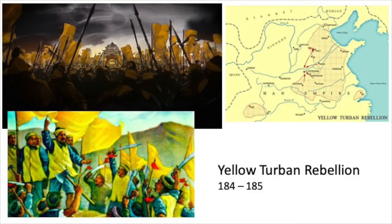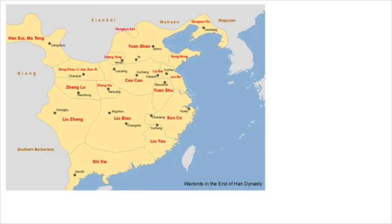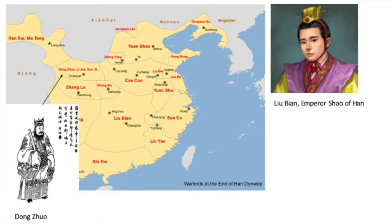Let's go back to the year 184. In this year, the Yellow Turban army spread across the Han Empire. To suppress the rebellion, local governors enlarged their armies and became self-governing warlords. Although the main force of Yellow Turban was defeated within one year, the central court of Han dynasty lost its authority over local governments. Regional military forces started to fight against each other.